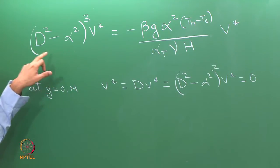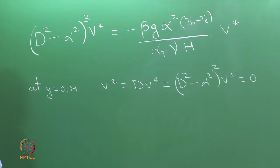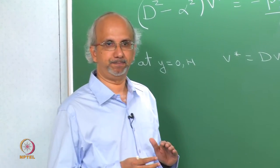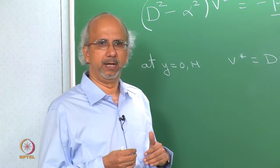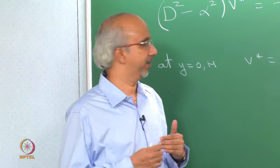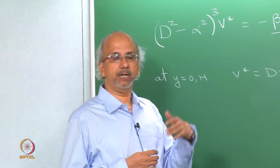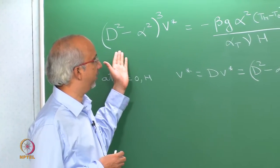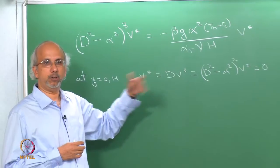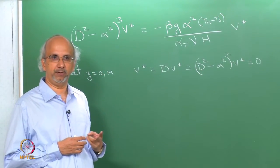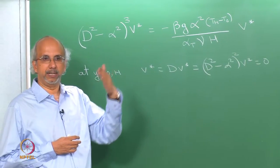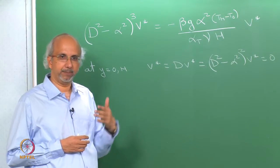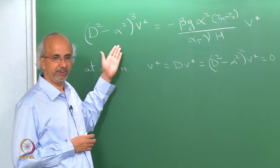This particular ordinary differential equation was obtained by eliminating the U component of velocity, the pressure, and the temperature. We linearized the governing equations about the steady state and then converted the partial differential equations to ordinary differential equations, obtaining this 6th order ODE. Although the Navier-Stokes equations were only second order to begin with, because we eliminated the U component of velocity, the X component of velocity, and the temperature, the second order equation became a 6th order equation.